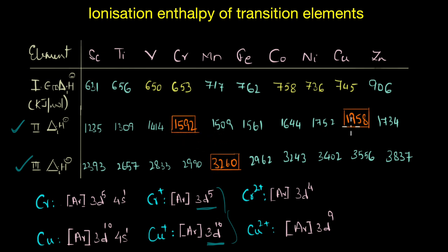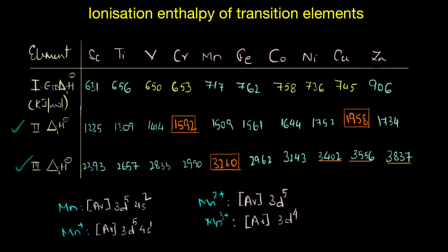We can extend the same logic to manganese as well. In the case of manganese, Mn2+ to Mn3+ transition demands a high supply of energy. This is because manganese is forced to move from a highly stable 3d5 electronic configuration to a less stable state which is 3d4.